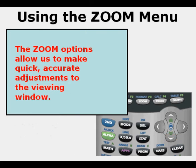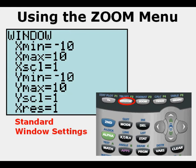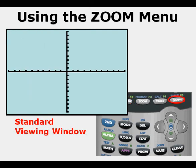The Zoom options allow us to make quick, accurate adjustments to the viewing window. The first option we'll look at is Zoom 6, or Zoom Standard. If we press the Window key, we are likely to see the standard window settings: X-Min is negative 10, X-Max is 10, Y-Min is negative 10, and Y-Max is 10. If we press Graph with the window in standard settings, this is what we get — the standard viewing window.